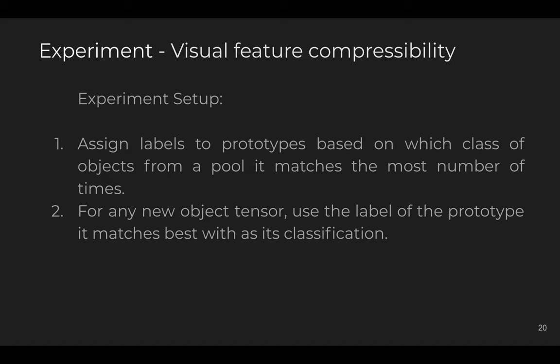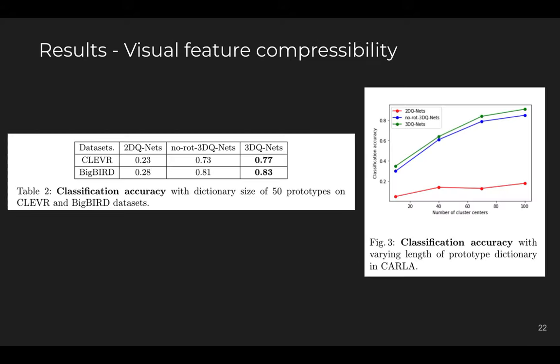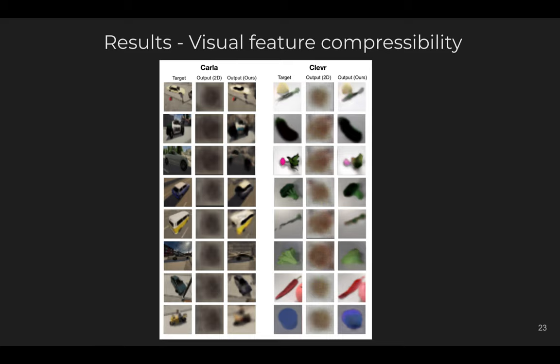Next is visual feature compressibility. Here we assign labels to prototypes based on which class of objects from a pool they match most often, then for any new object tensor we use the label of the best-matching prototype for classification. We compare 3DQNETs, a 2D variant, and a non-rotated variant. The 3DQNETs achieve the best compression and classification accuracy, and accuracy increases with the number of prototypes. Qualitatively, 2D compression is poor whereas our 3D compression is sharp.